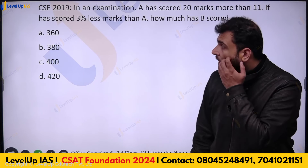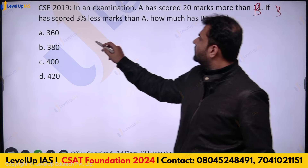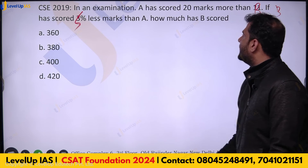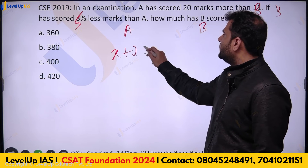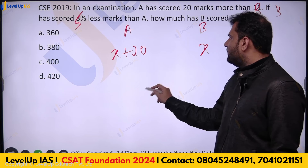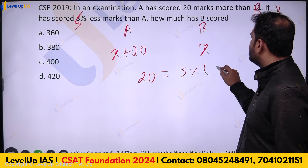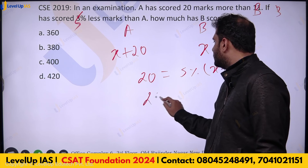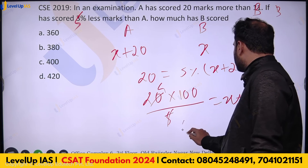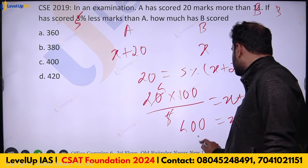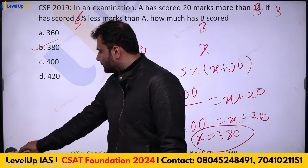Similar question: A scored 20 marks more than B, and B scored 5% less marks than A. Let B score x marks, so A scored x + 20. Then 20 = 5% of (x + 20), so 20 × 100/5 = x + 20, giving 400 = x + 20, thus x = 380. B scored 380 marks.